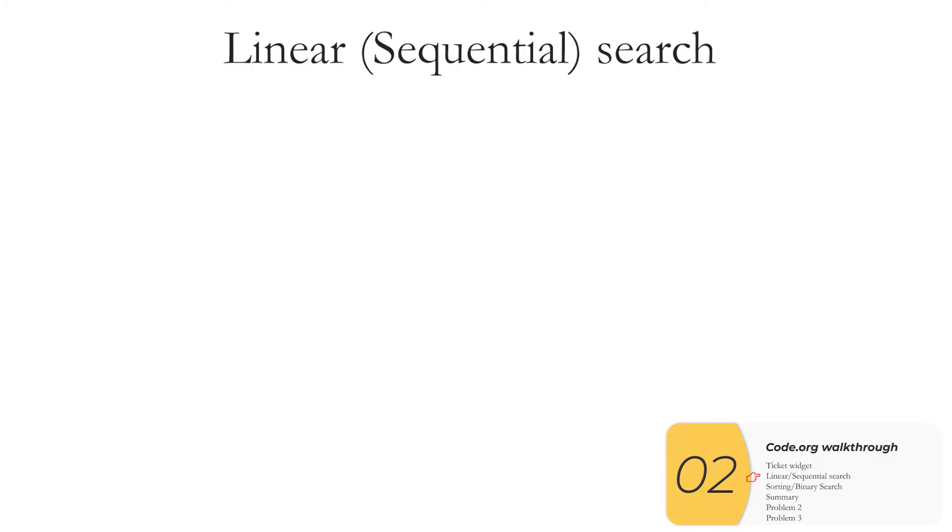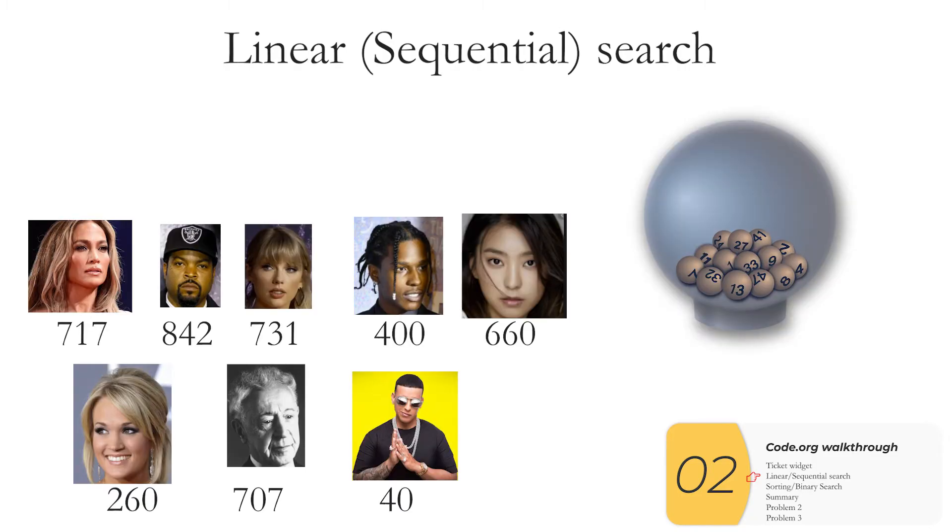So let's try this one more time but now we're going to add three new people to the class. Once again I'll pull a winning number out and that number is 717 again. As I search for the winner from left to right it takes me just one step. JLo wins again but it won't always end up being this way. Let's try again. This time I pick another winner. This winner is 40. So once again I'm going to search from left to right and this time around it's going to take me eight steps to get to Daddy Yankee.